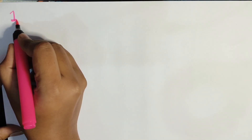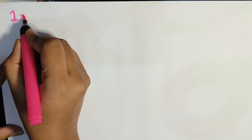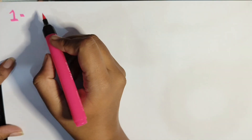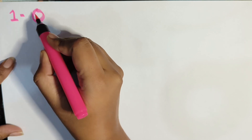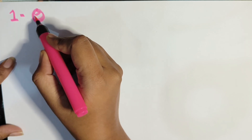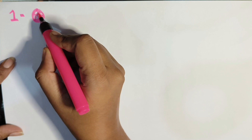So here I am writing number 1. In front of 1 you have to make 1 ball. So we will make like this. This is 1 ball.